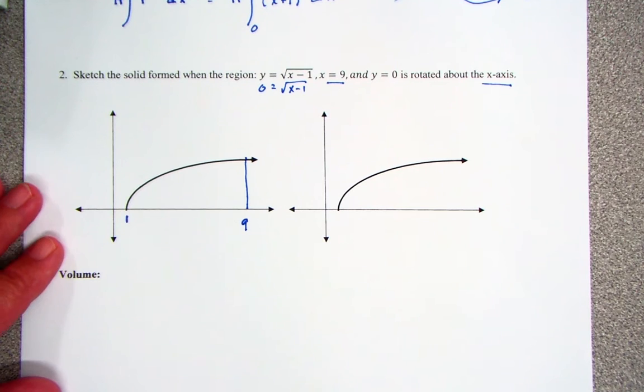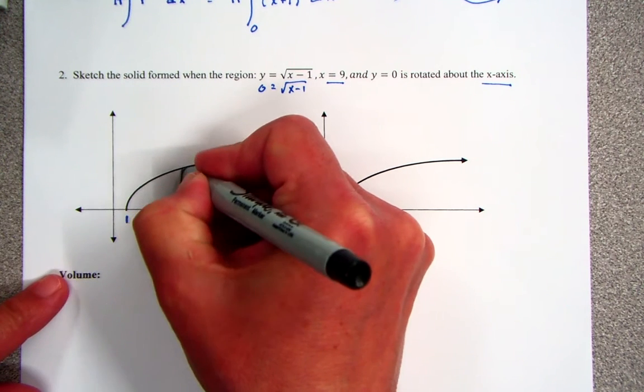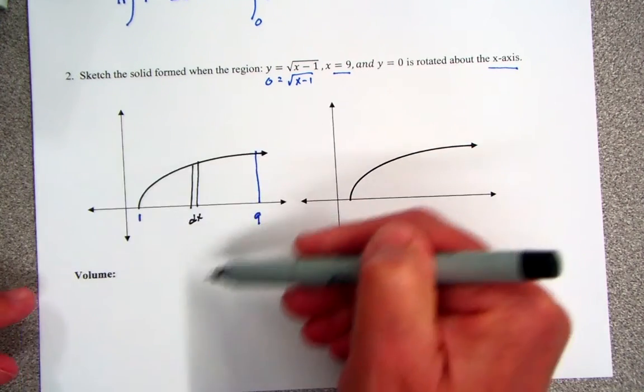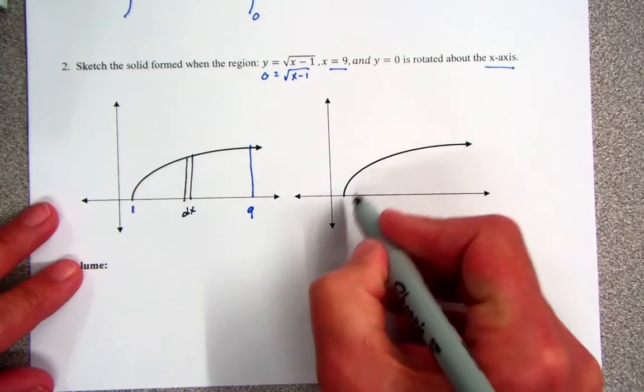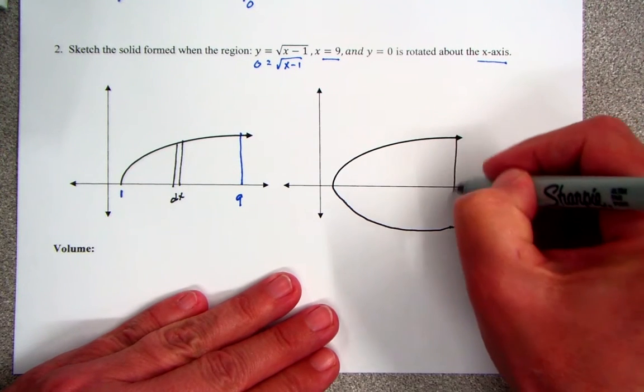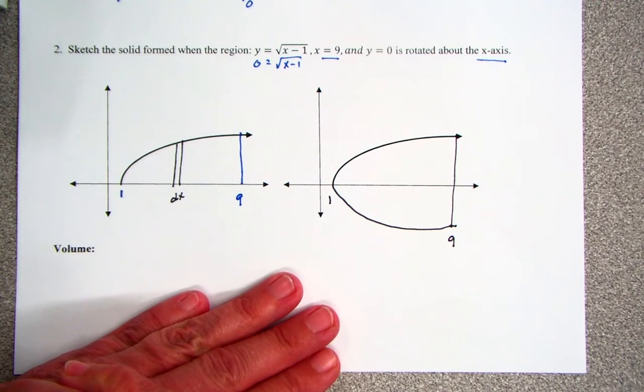So what we had been doing earlier is we were cutting this section right here and finding area. Well, as soon as I rotate this, you can see, hopefully, that it's going to come down here. It should be fairly symmetric. It's going to end at 9. It started at 1 because it was shifted over 1. So it somewhat looks like the end of a bullet.